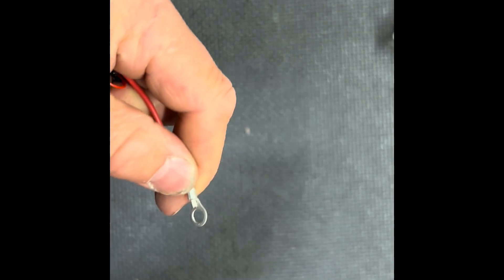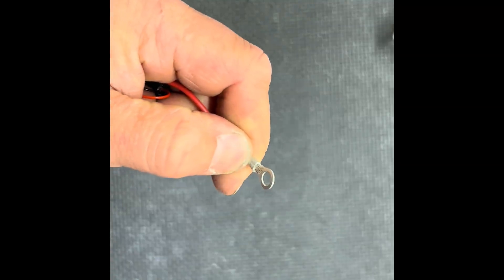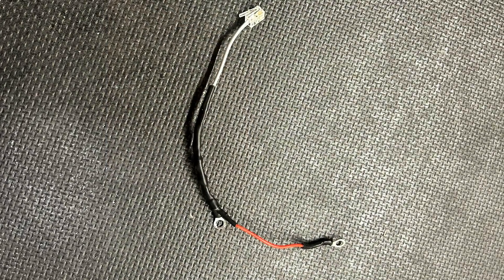On the other end of that extension wire, we're going to add another ring terminal. After adding some more heat shrink tubing, the finished harness should look like this.